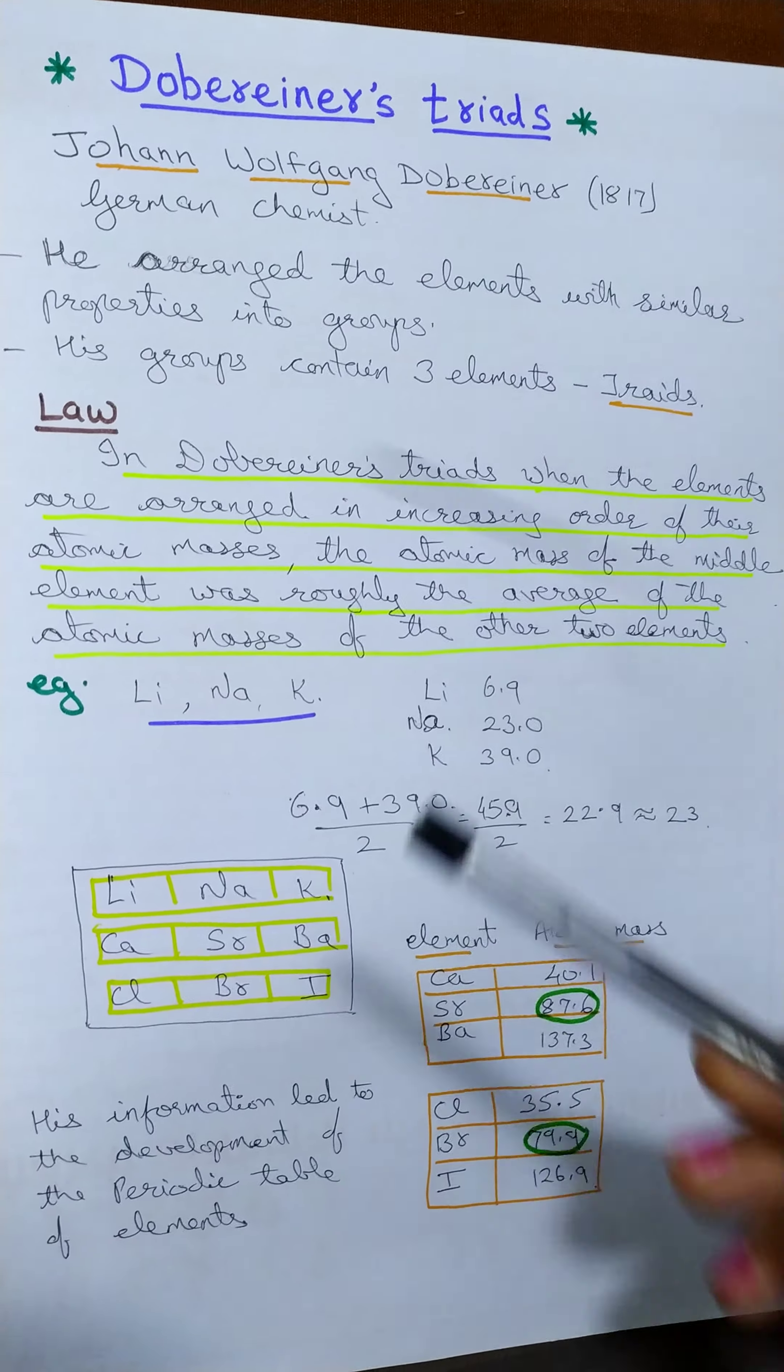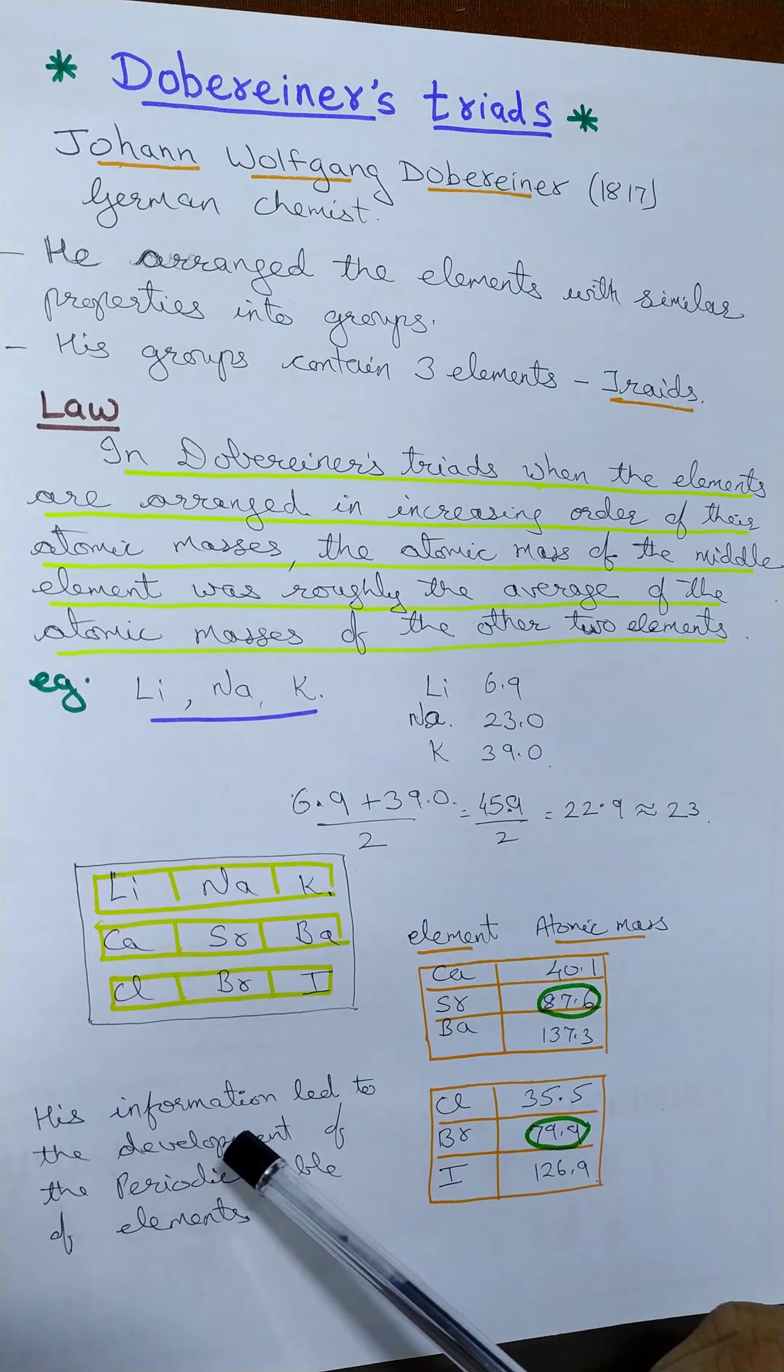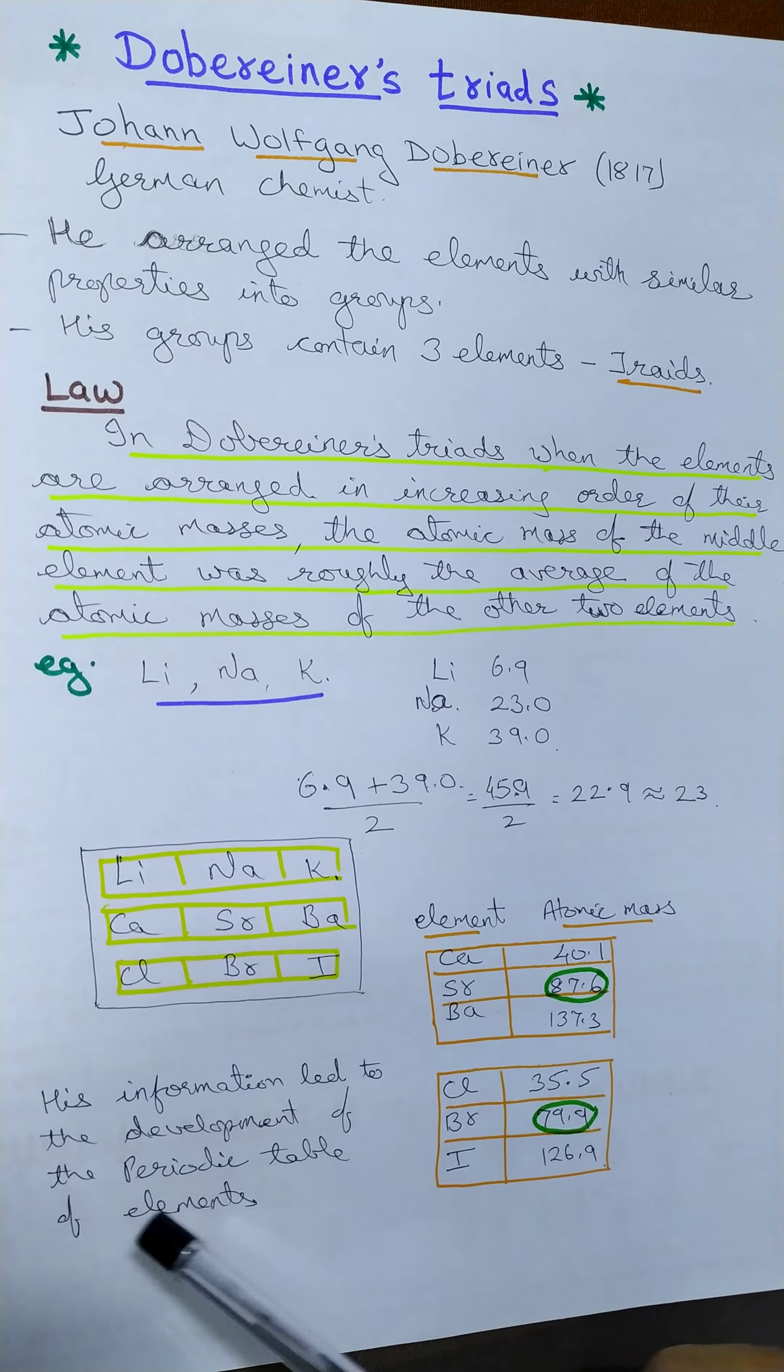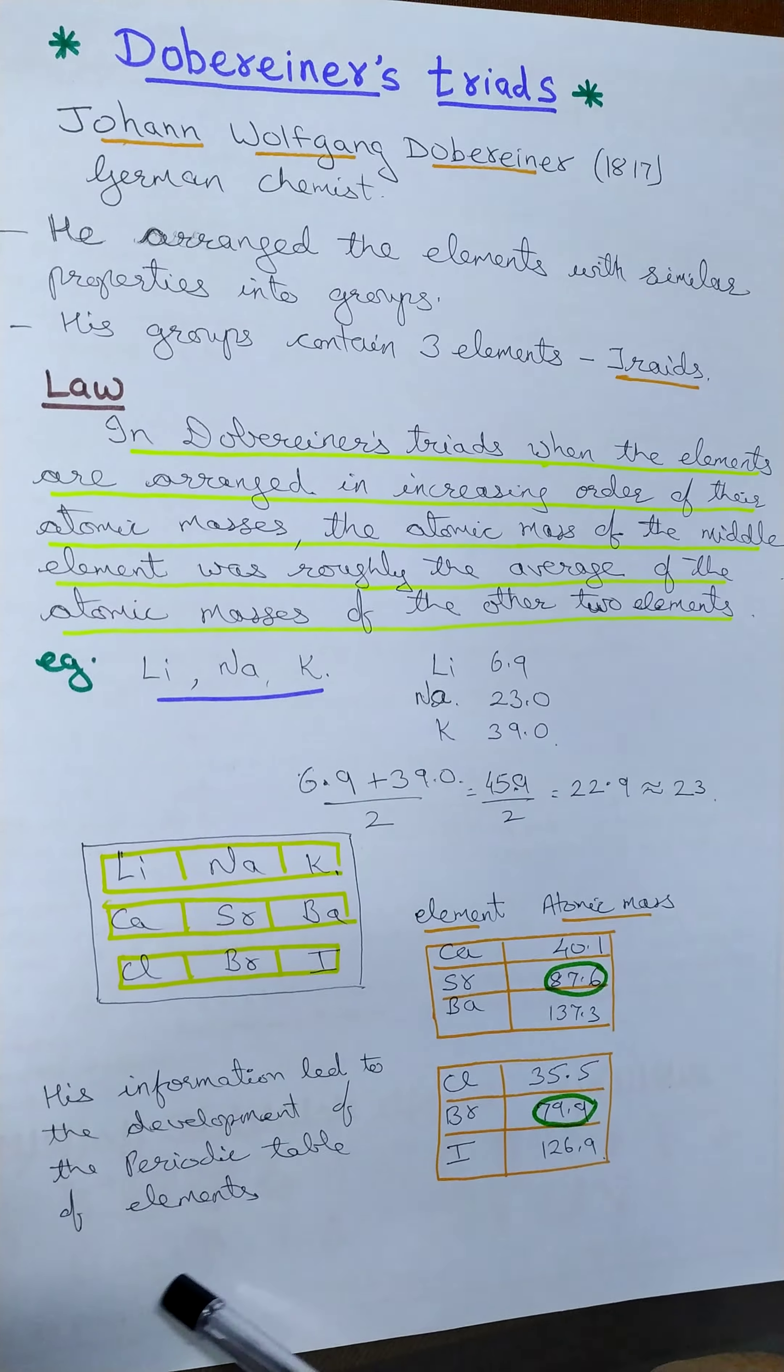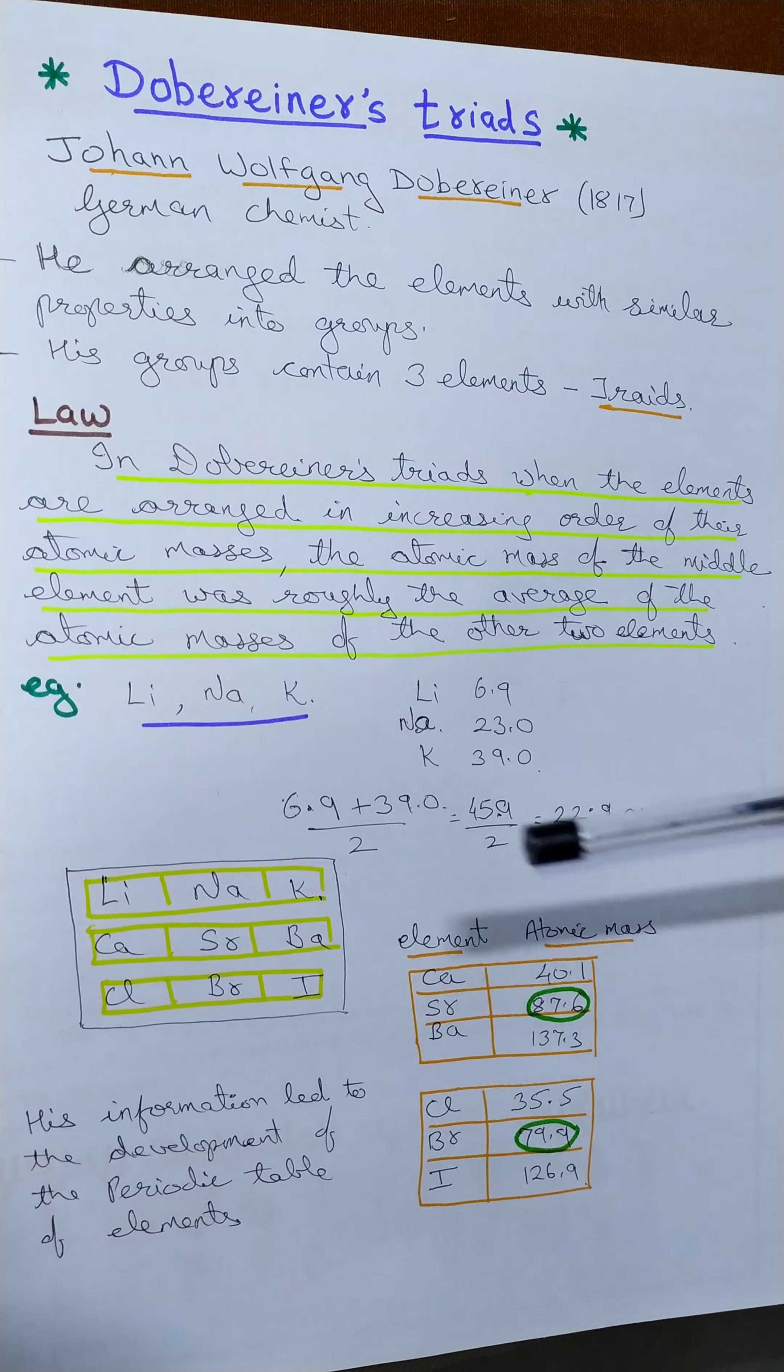the study of Dobereiner was not successful. He failed. But still, he has done some work and because of this, his information led to the development of the periodic table of the elements. In short, we have completed Dobereiner's triad.